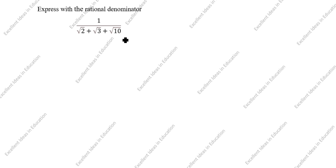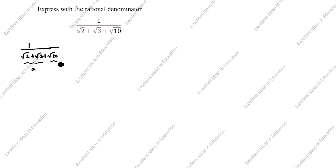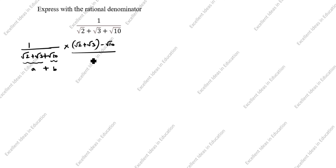You see the denominator has three values, but we need only two values. What we will do in this case — 1 divided by root 2 plus root 3 plus root 10 — we will take root 2 plus root 3 as 'a' and root 10 as 'b'. Since here is plus, we will multiply by (root 2 plus root 3 minus root 10) divided by (root 2 plus root 3 minus root 10).